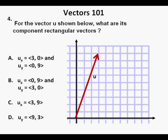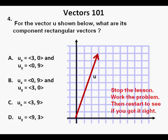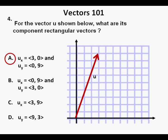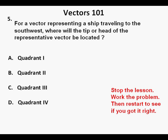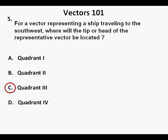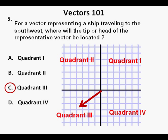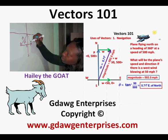Problem 4: For a vector U shown below, what are its component rectangular vectors? The correct answer is A. Problem 5: For a vector representing a ship traveling to the southwest, where will the tip or head of the representative vector be located? The correct answer is C, quadrant 3. Quadrant 3 is the lower-left quadrant, and that's where a ship going to the southwest will be headed.